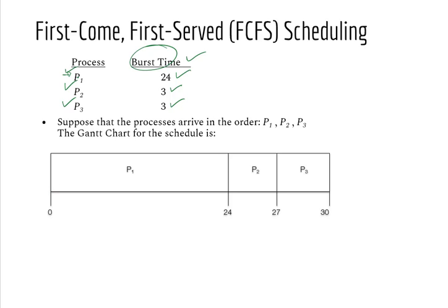From time 0, P1 will execute on the CPU. P1's burst time is 24, so from 0 to 24, P1 executes on the CPU. After 24, P2 comes. P2's burst time is 3, so 24 to 27, P2 executes. Then P3, and P3 executes from 27 to 30.